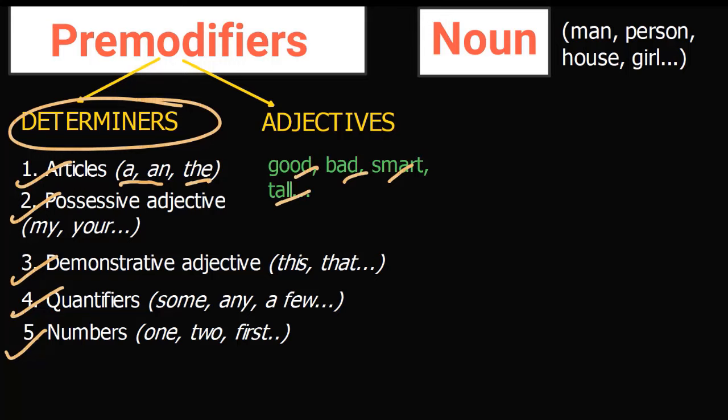Now we know what a phrase is, the 12 types of phrases, how they look, how to use them, and what they do in a sentence. You should be feeling confident now. If you enjoyed the video, give it a thumbs up, subscribe to the channel, and press the notification button. Ask any questions in the comment section below. See you soon!